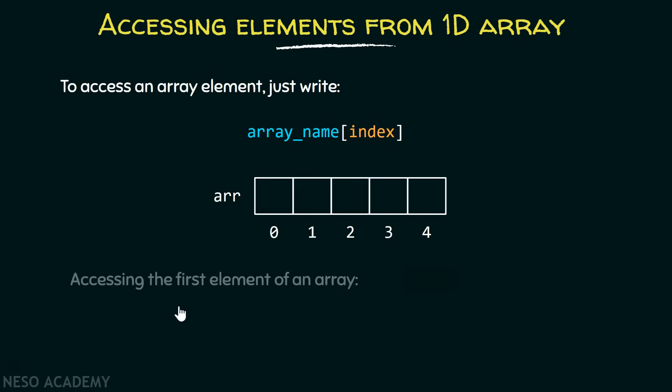If you want to access the first element of an array, you can access that element by specifying the index as 0. Here you have to write the name of the array, then you have to write the square brackets and then you have to specify the index.